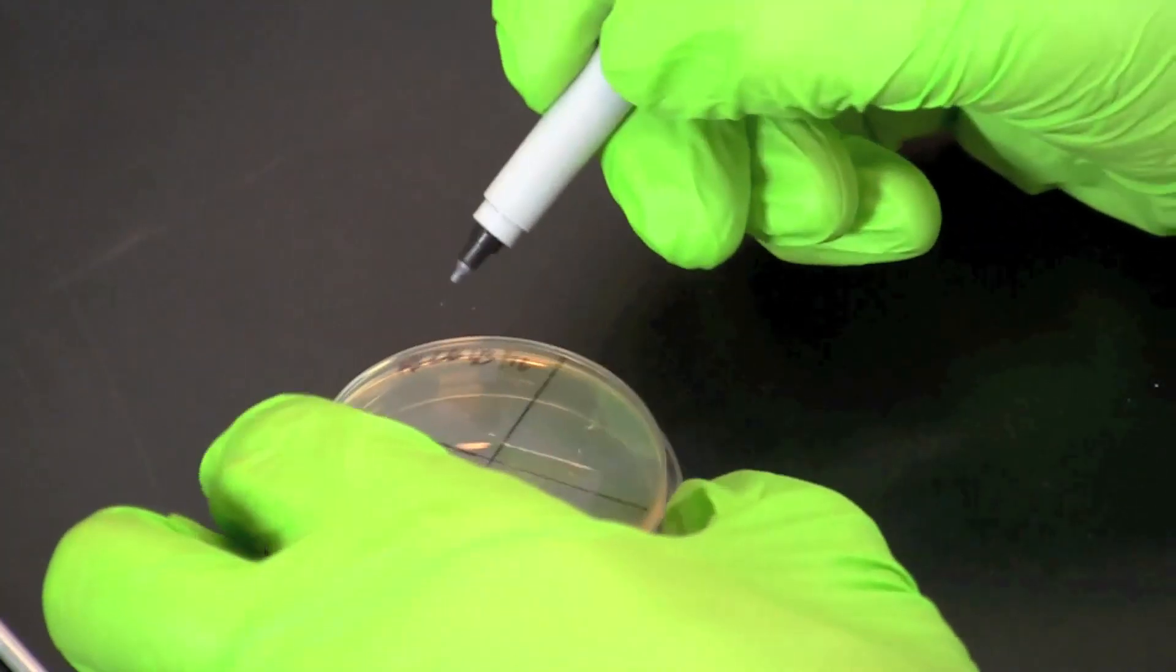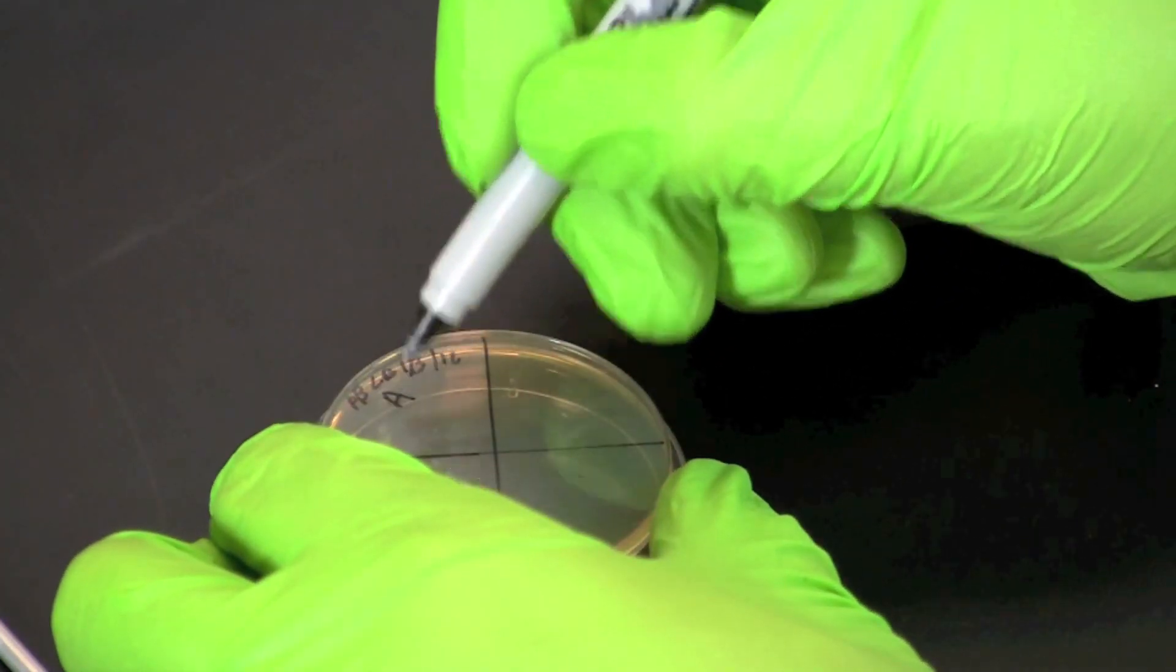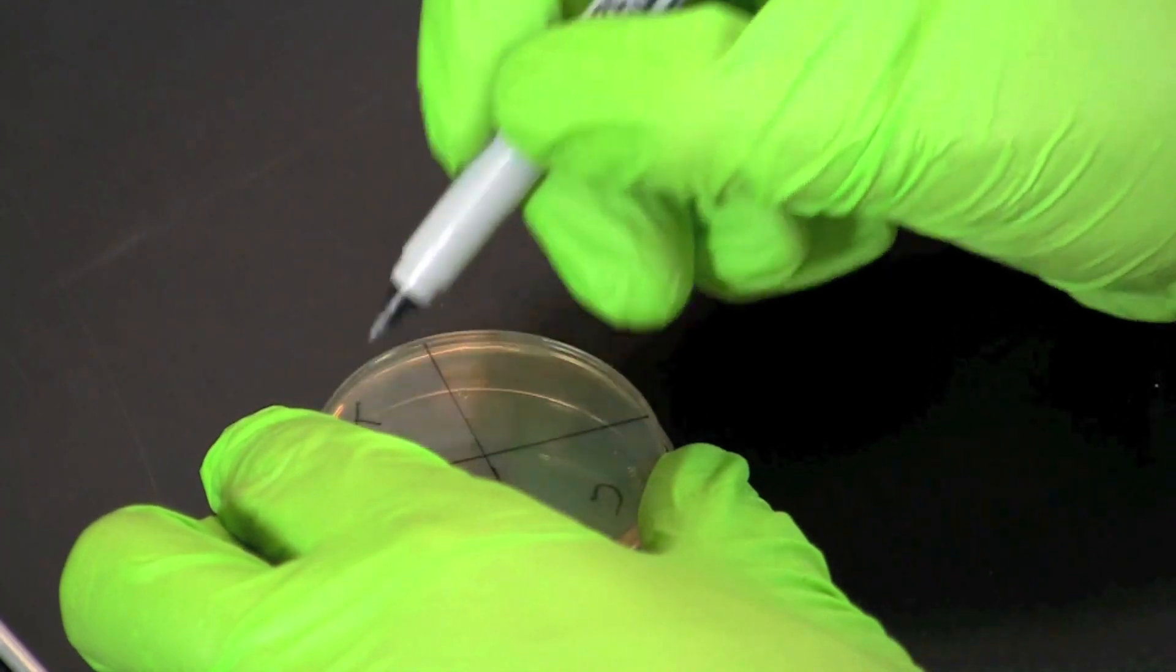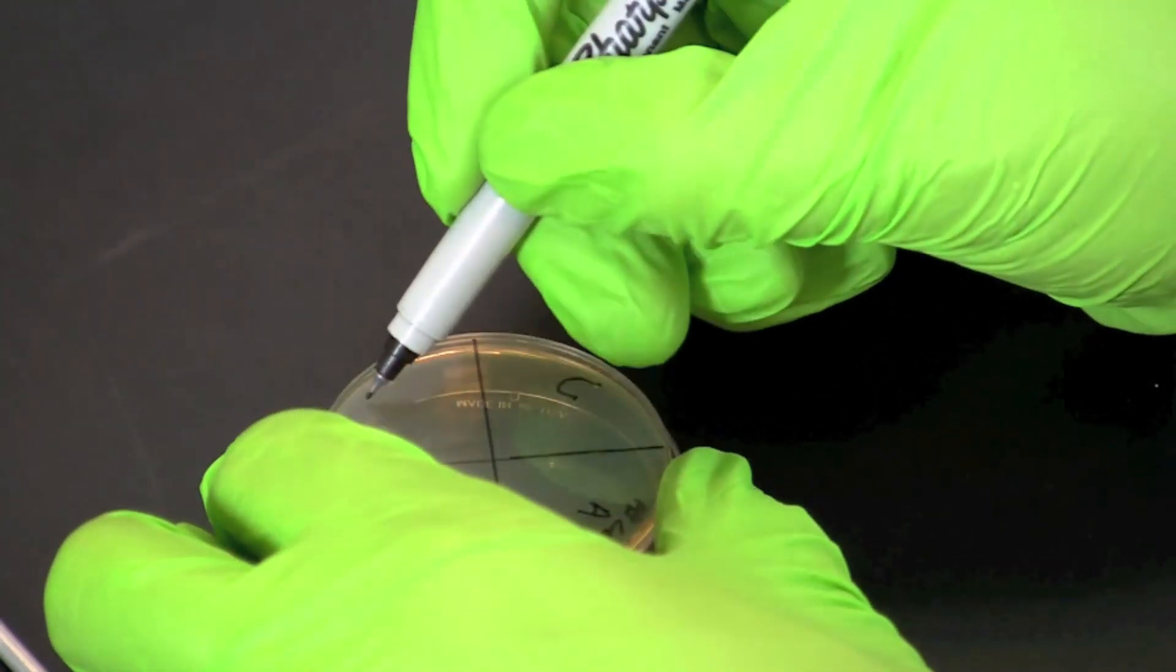Label the quadrants C, A, T, and K for control, ampicillin, tetracycline, and kanamycin.